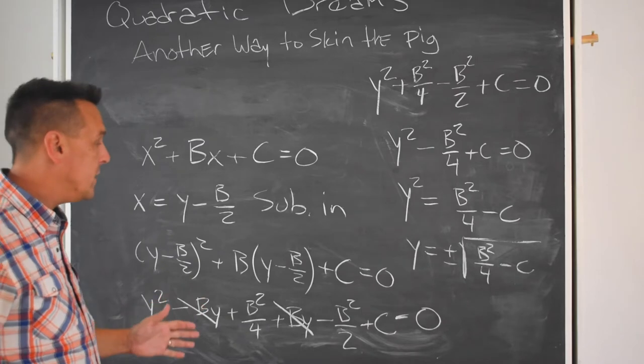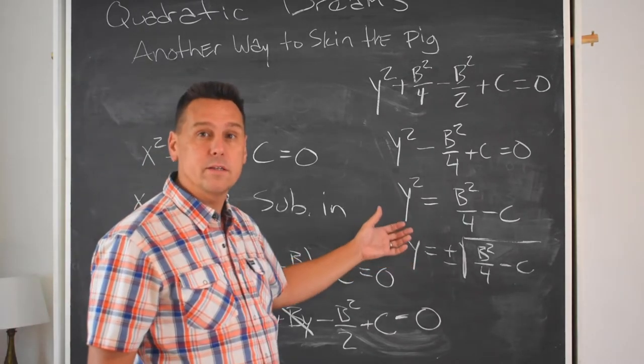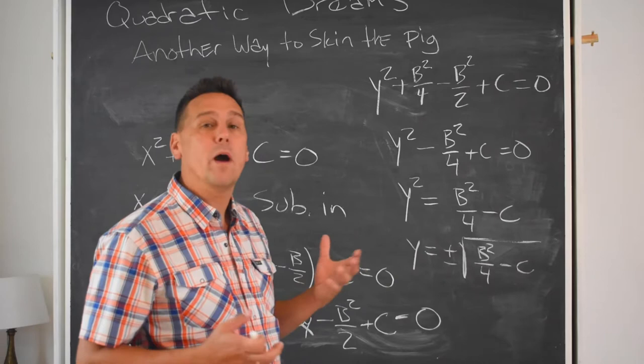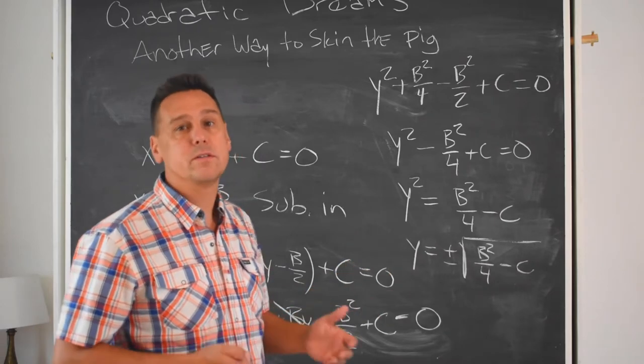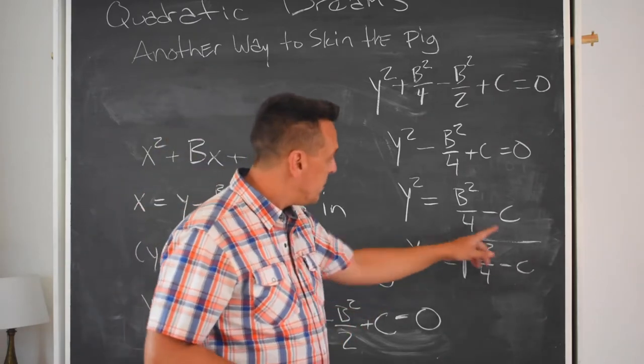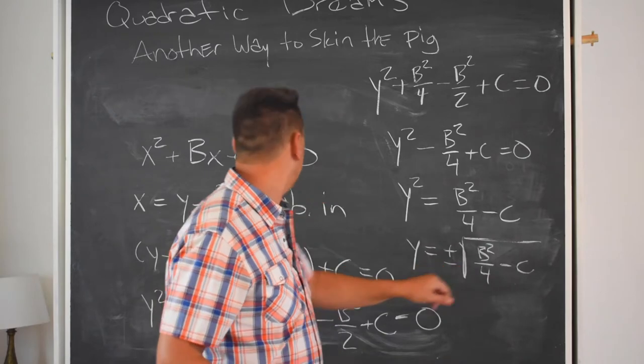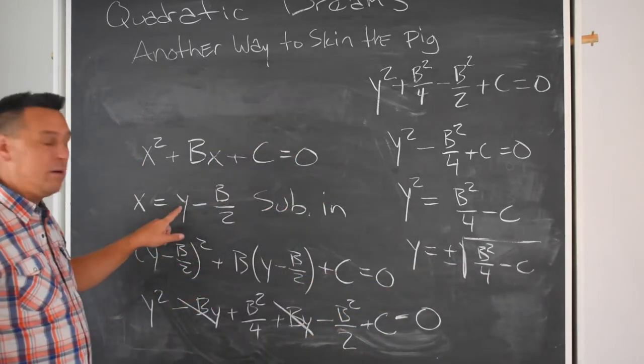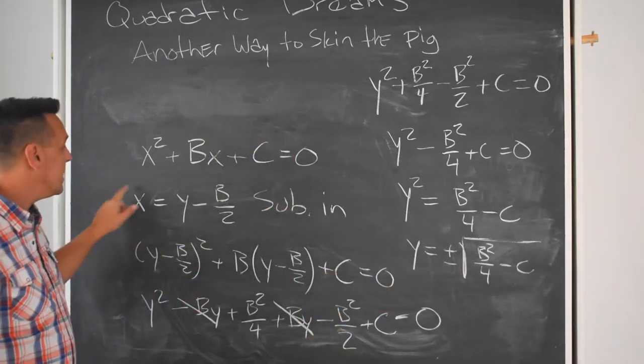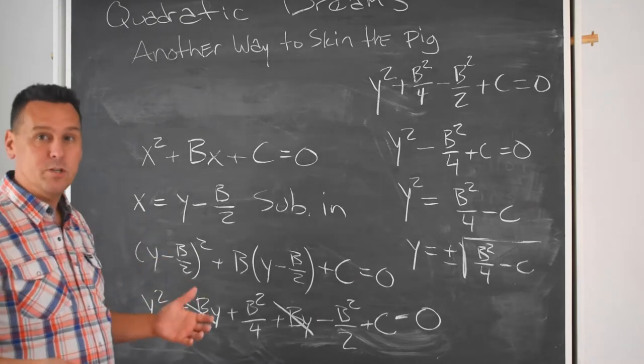Now, you might complain, well, you gave me a formula for y. This solves for y. Y wasn't even around when we started. I wanted to solve for x. But notice that if I plug in for y and get a value here, then I can plug that value in here and take another b over 2 away from it. And that solves for x just fine.